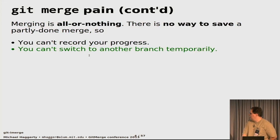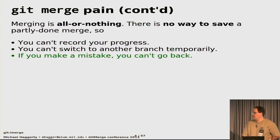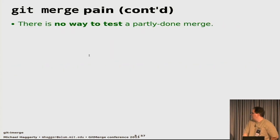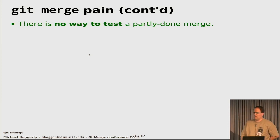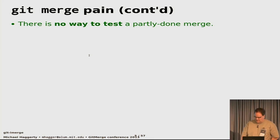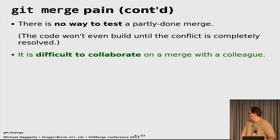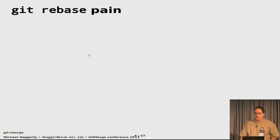You can't record your progress. You can't switch to another branch while in progress. If you make a mistake, you can't go back — it's all or nothing. There's no way to test a partially merged tree. Once you have those merge conflict markers in your code, you can't build or test it. You have to resolve the whole conflict first. And it's hard to collaborate on a merge — there's no way to push a conflicting merge to your repository.